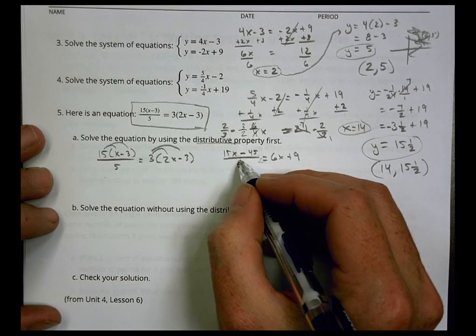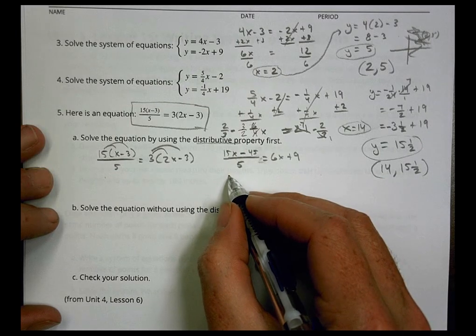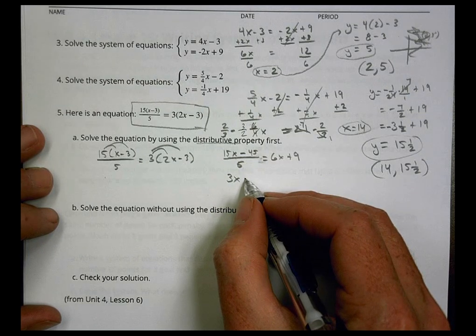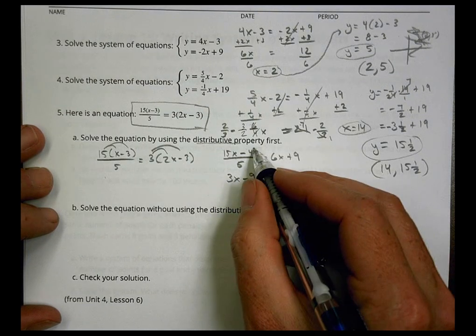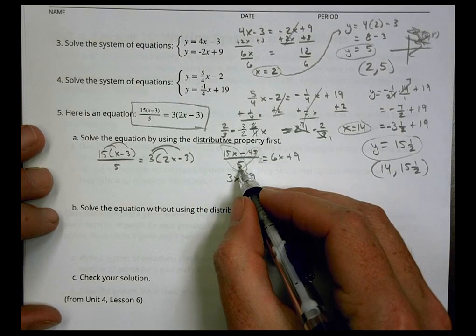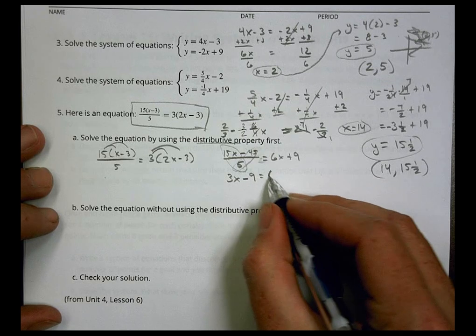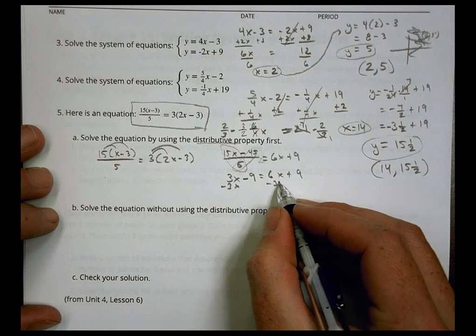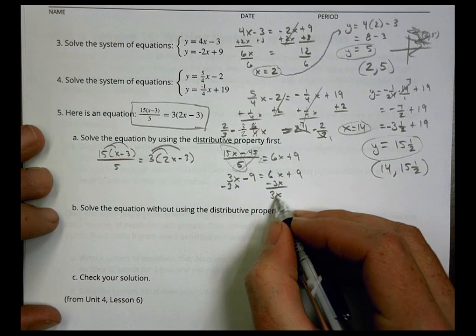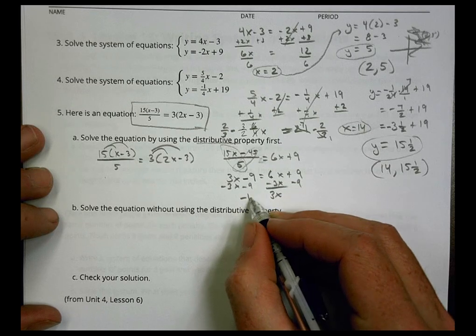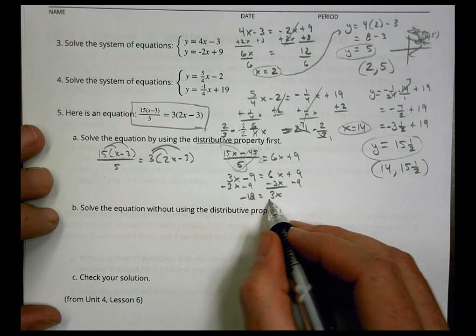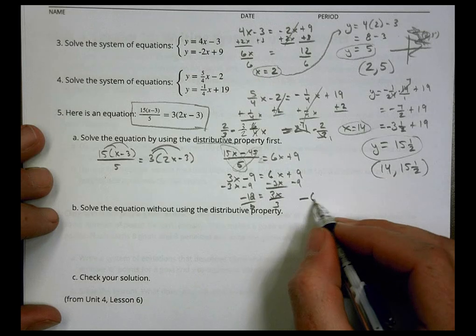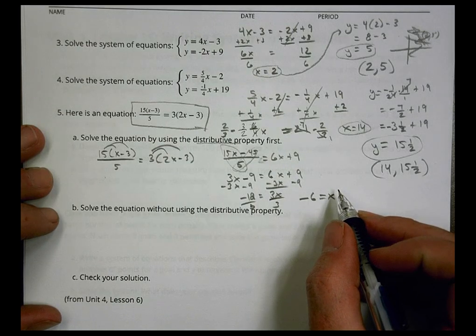So now we've done the distribution and we can reduce. I can reduce 5 and 15 becomes 3x. And 5 goes into 45 nine times. So 3x minus 9 equals 6x plus 9. Now we're back to regular solving. I'm going to subtract 3x, subtract 3x. I'll subtract 9, subtract 9. So I have negative 18 here. Divide both sides by 3. And in this case, negative 18 divided by 3 is a negative 6.